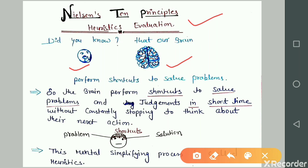This is the process of heuristics: simply we have a problem, create a shortcut in our mind, and get the solution. This is the final process and this mental simplifying process is called heuristics. Now we start the ten principles.